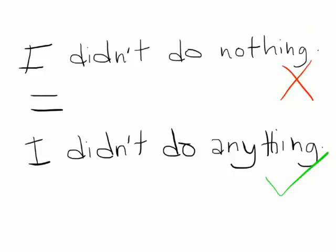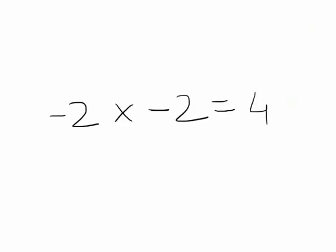In math, two negatives make a positive. But in English, two negatives generally make an incorrect sentence.